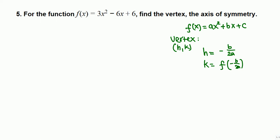Let's come back here. For this function, a is 3, b is negative 6, c is 6. So the vertex: we find h is negative b over 2a, that is negative b, b is negative 6, over 2 times a, a is 3. Negative times negative cancel to positive: 6 over 2 times 3.